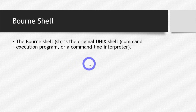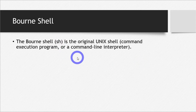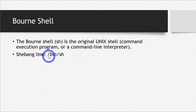Born shell is actually the original Unix shell, and it was named after its developer, Stephen Bourne. It is also known as SH. The shebang line for born shell is /bin/sh. I hope you're familiar with the shebang line — I'll go into it in a while.